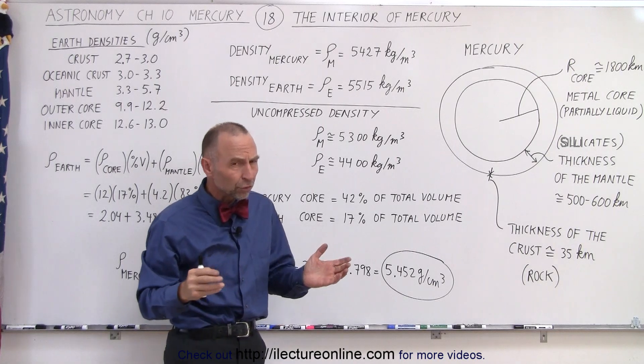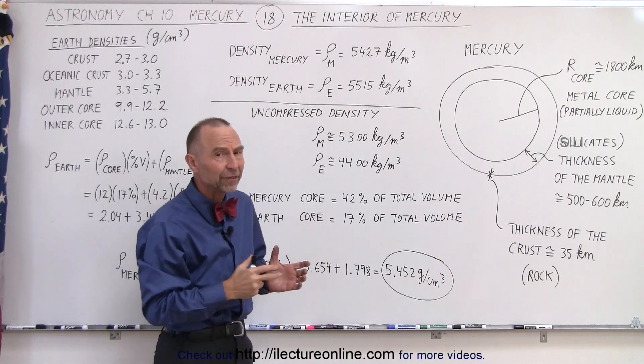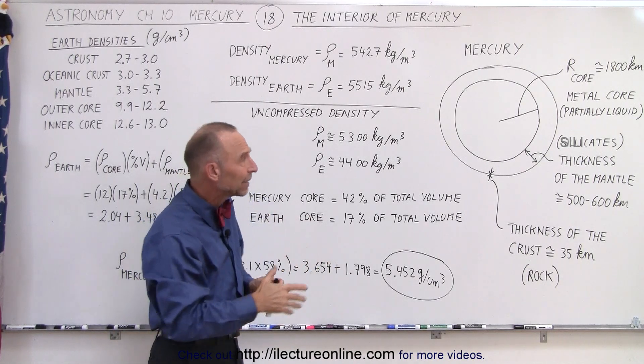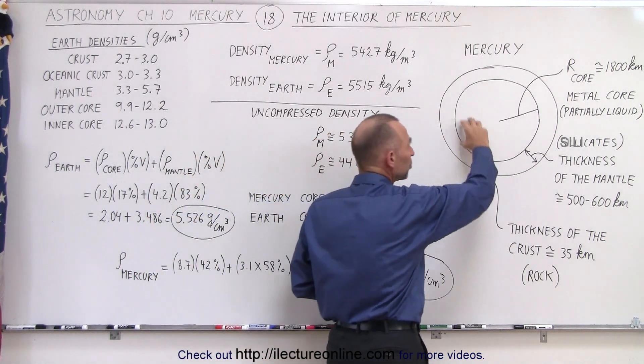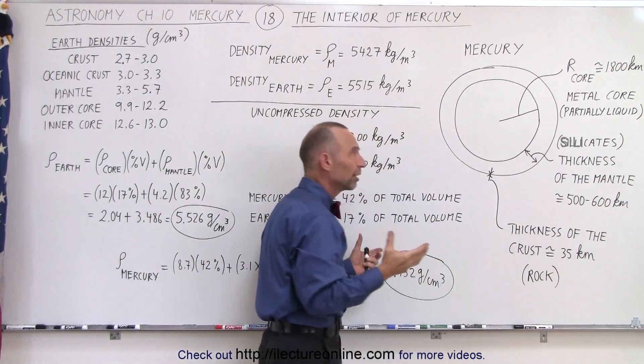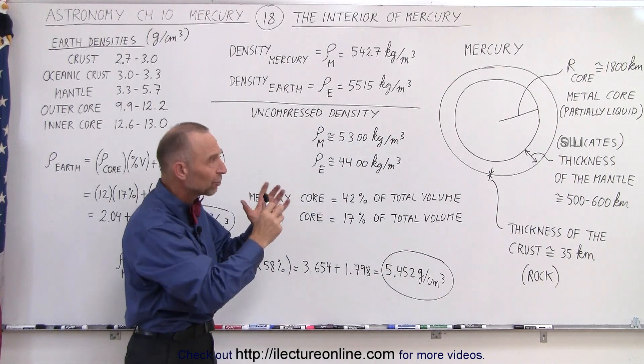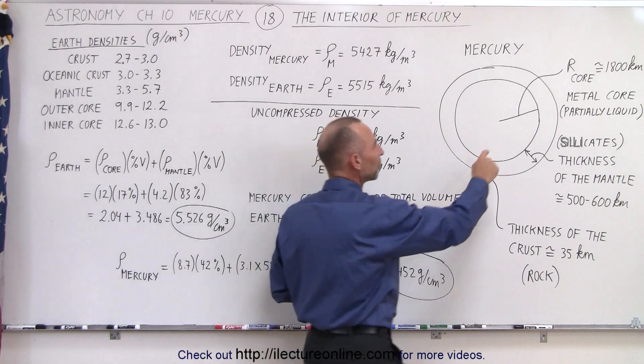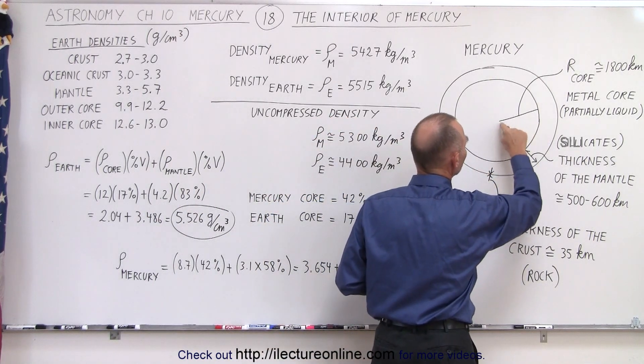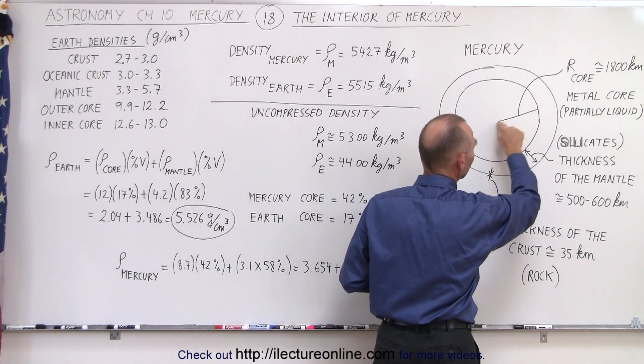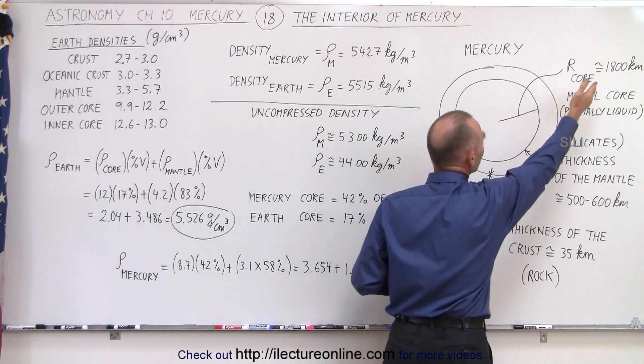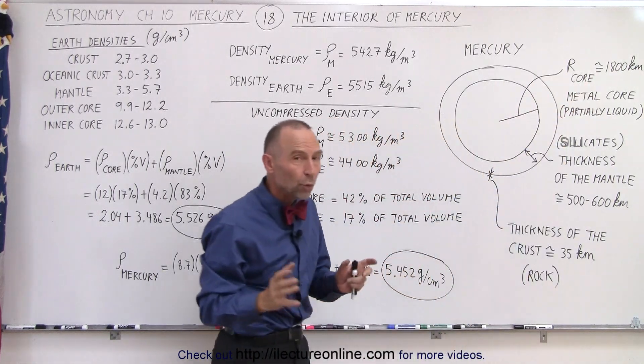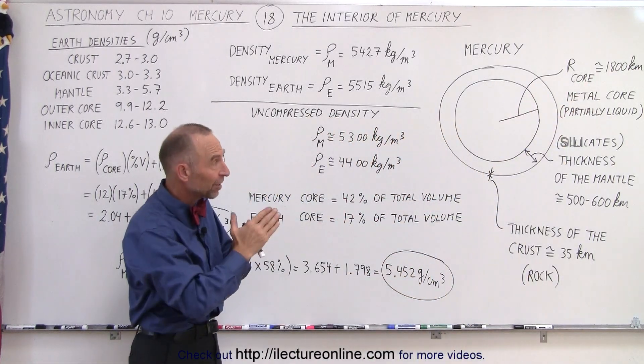Also, the planet has a weak magnetic field which would also indicate that there's a high probability of some movement inside the planet. And so therefore we have evidence to believe that yes, part of the core is probably molten. It turns out that the radius from the center of the planet to where the core ends is about 1800 kilometers, which makes it about 75 percent of the radius of the total planet.